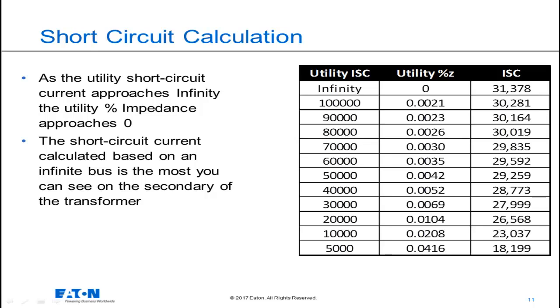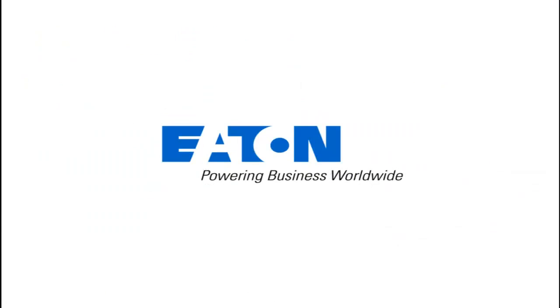Recognize that as the utility short circuit current approaches infinity, the utility percent impedance is approaching 0, and the short circuit current calculated on the secondary of the transformer is getting larger because we're removing the utility impedance from the circuit and from our equations. As I approach infinity from the available fault current from the utility, I am getting to the most fault current I could possibly get on the secondary of the transformer, hence the infinite bus. Thanks for sharing your time to talk about this technical topic.